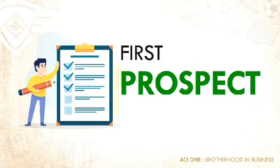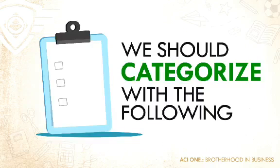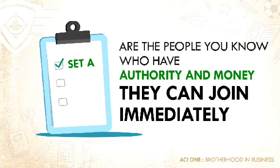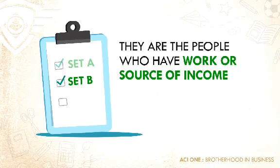First, you need to have the prospect list — a list of names of your friends and relatives or persons that you plan to share the business with. We should categorize it as follows: Set A are the people you know that have authority and money, meaning when they like the business, they can join immediately. Set B are the people who have work or a source of income.